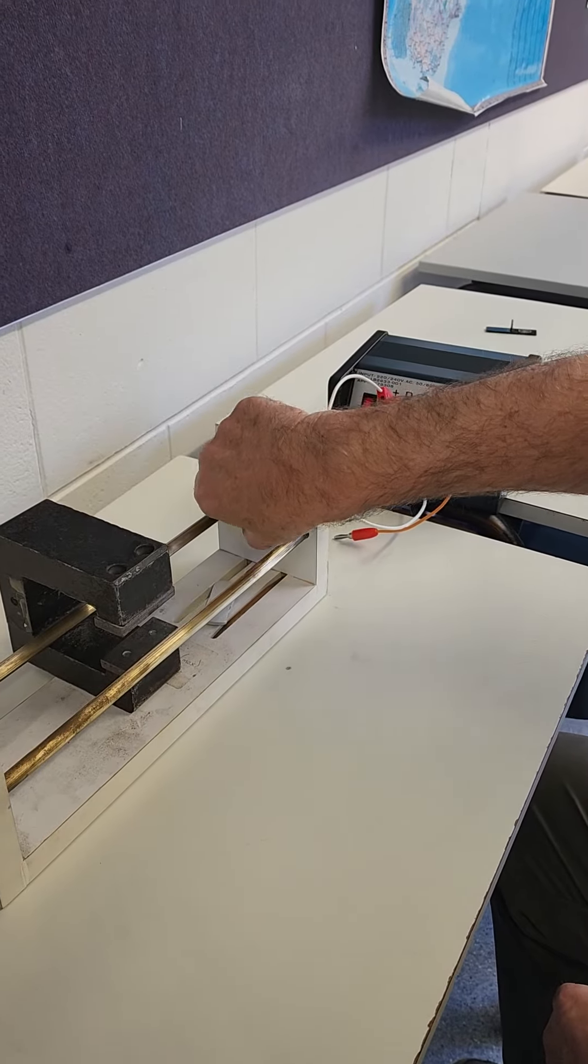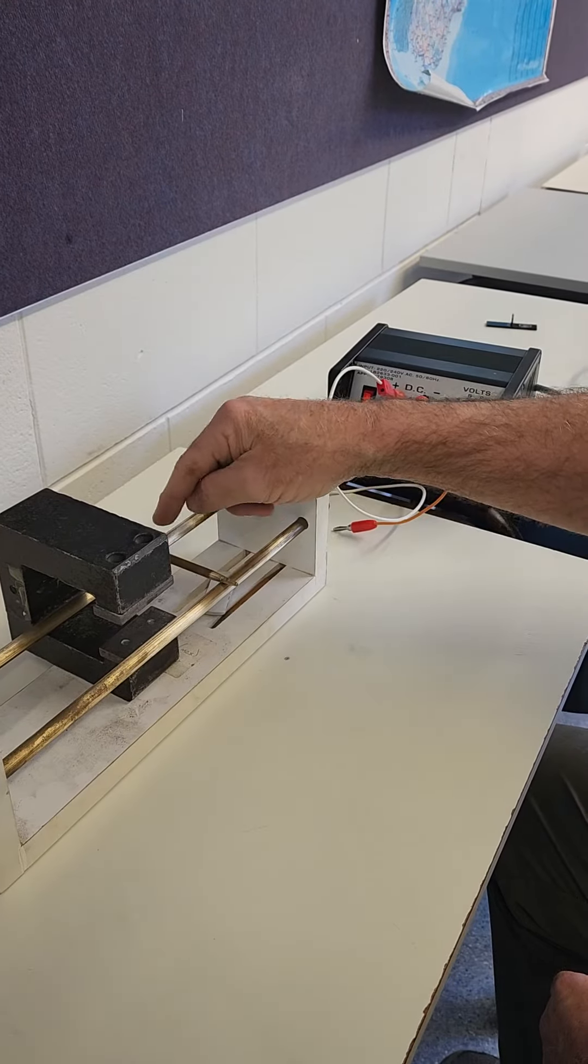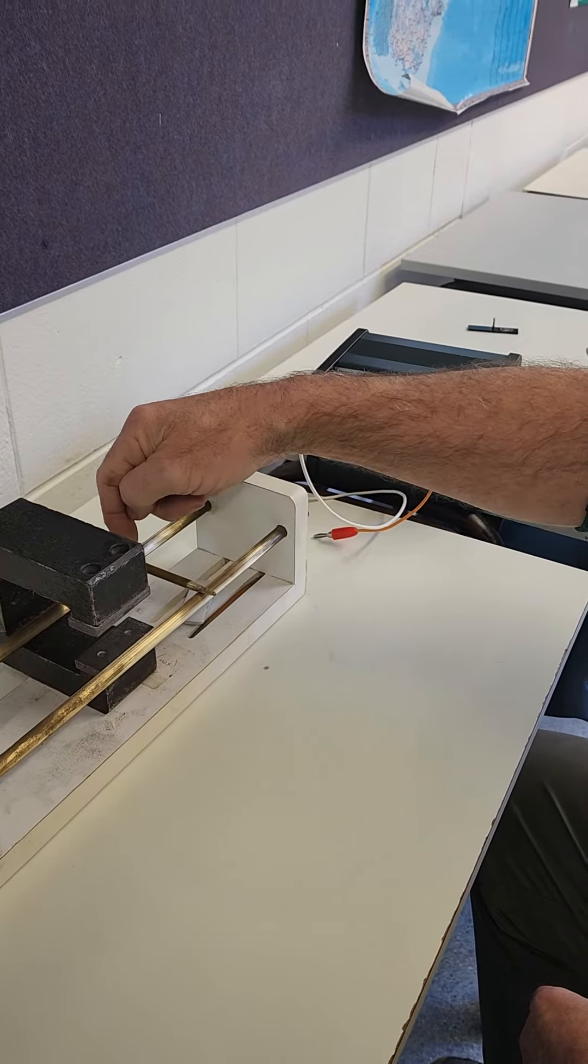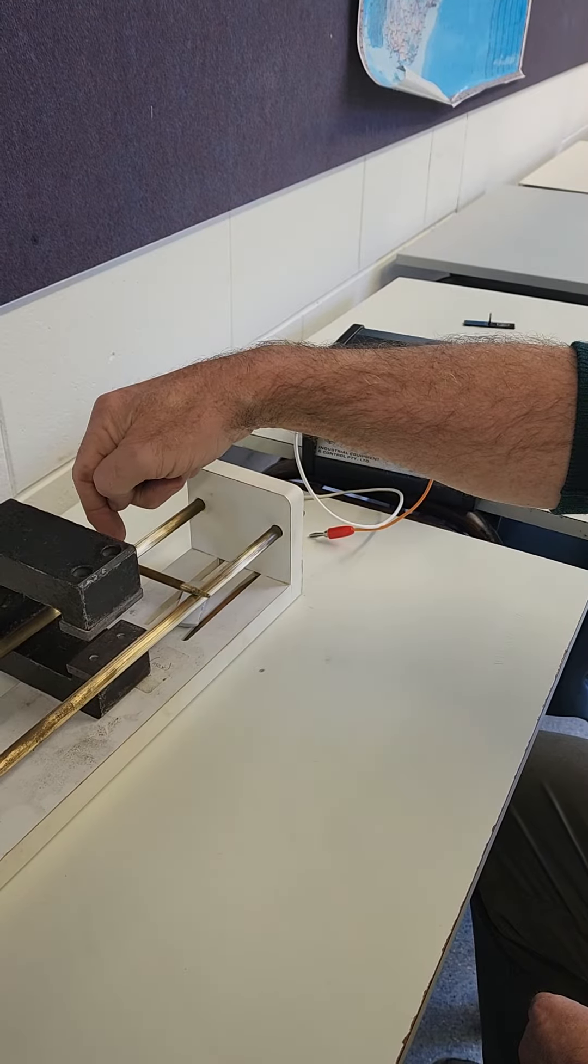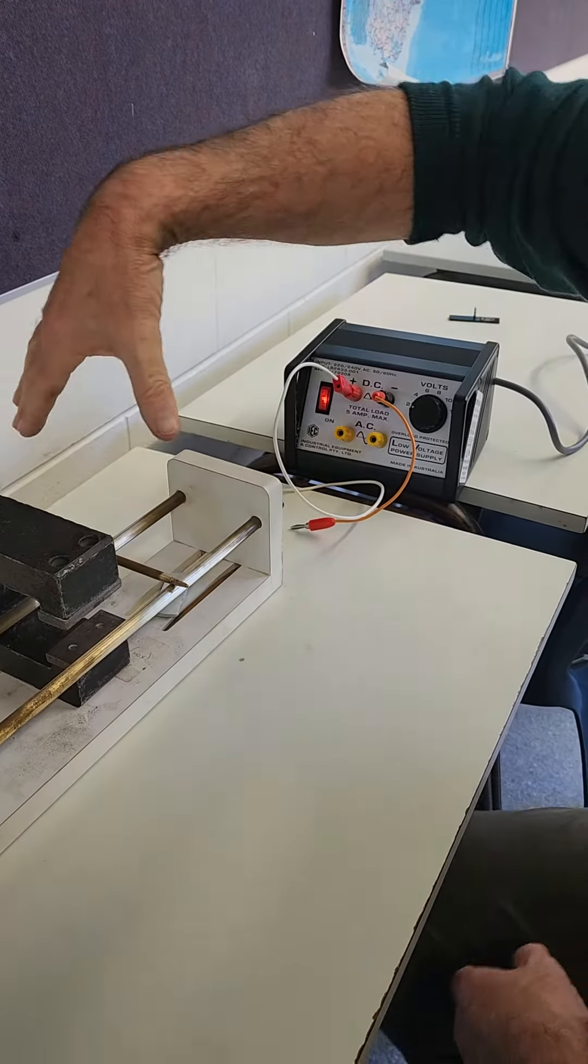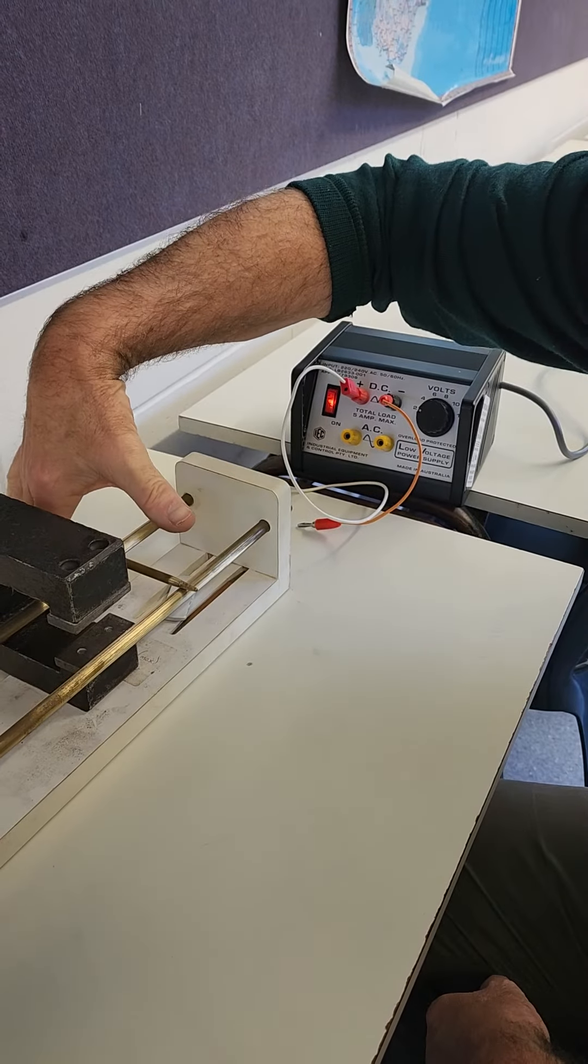So your conventional current is going from the positive to the negative. Your conventional current is going this way. So that's the direction of your thumb.